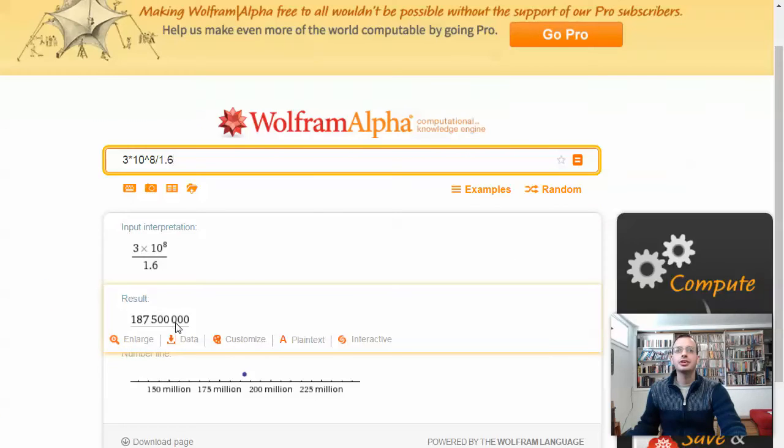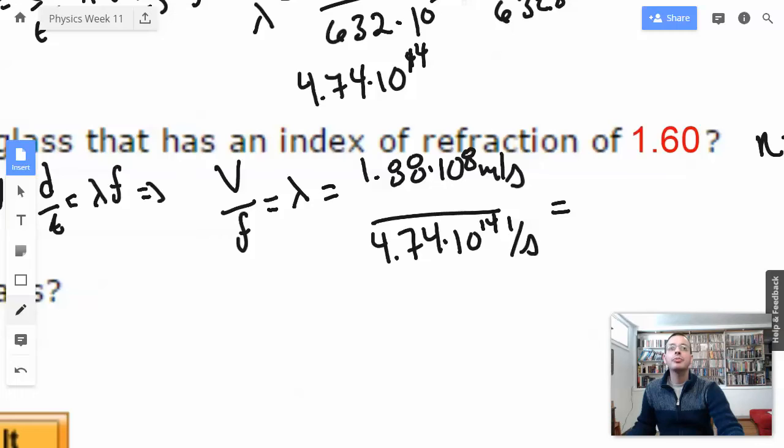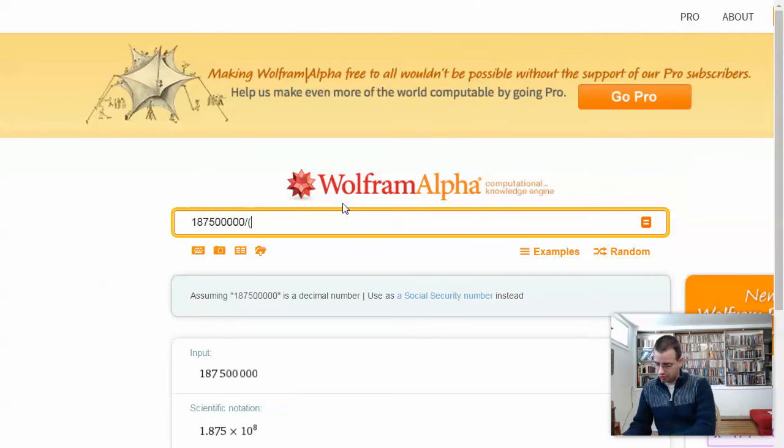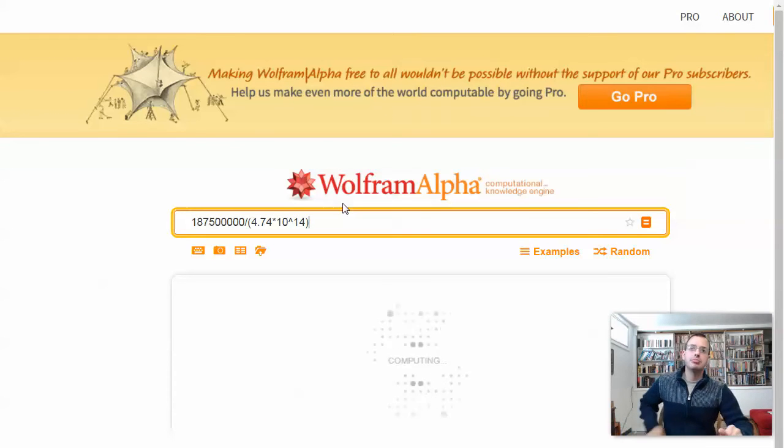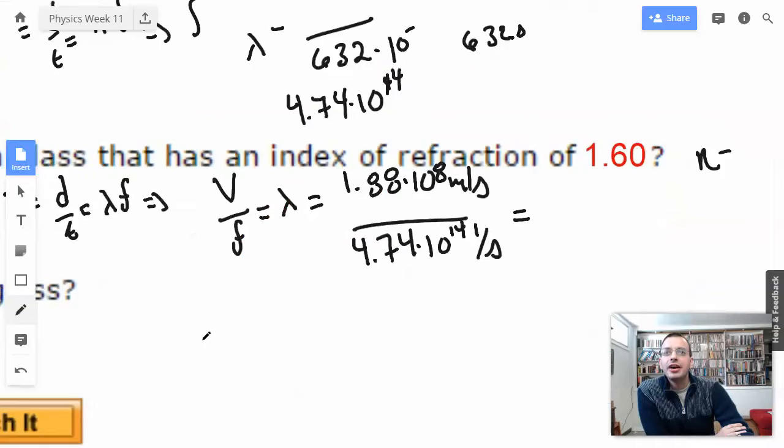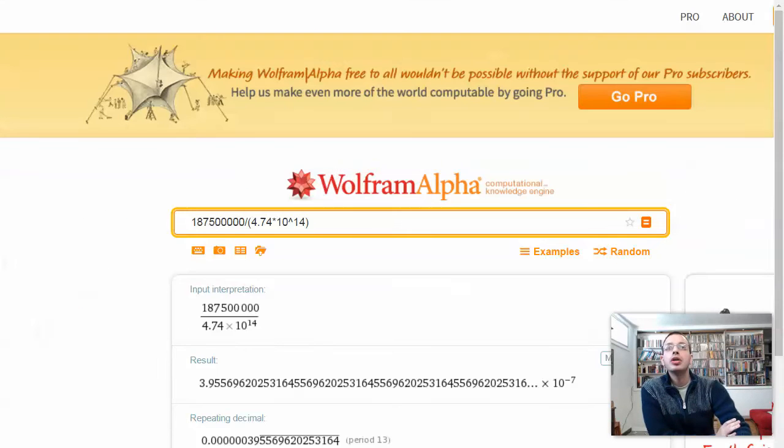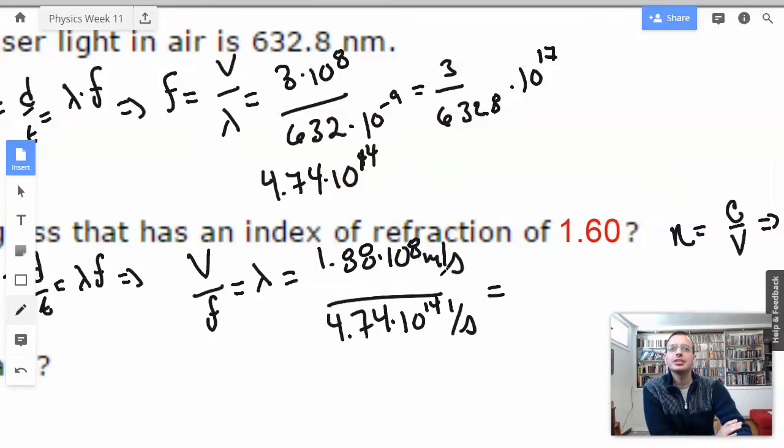Now I'm going to try this trick of clicking on this number. 4.74 times 10 to the 14th. This is going to give us something small. So we get 3.95. What do they want? Nanometers? Okay, so 3.96 times 10 to the negative 7th.